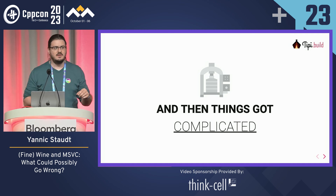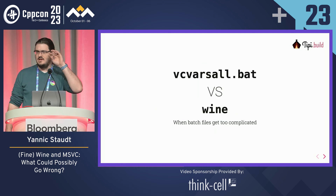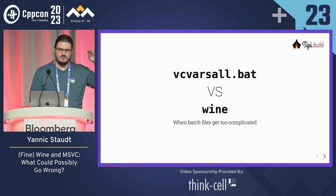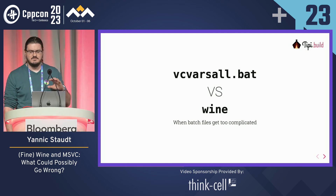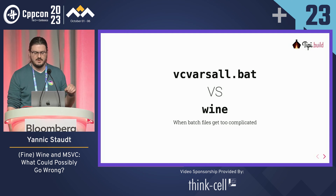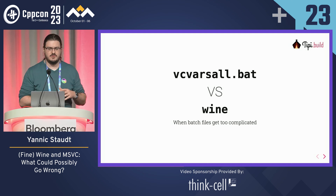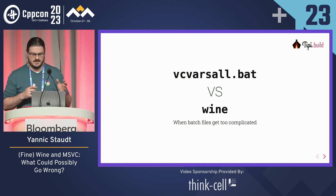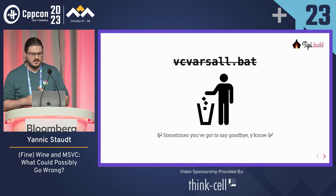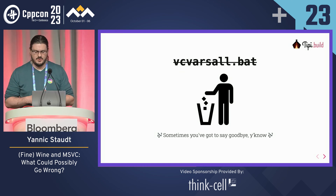Things got really complicated because it turns out that MSVC really likes to have the universe set for it from the environment variable side of things. VCVARS all — Windows developers might be familiar with that one — is a beast. It's way too complicated as a batch script to even work on Wine's command line interpreter because it does all sorts of wonderful things. So this was another instance of dropping it, goodbye, and writing it on my own.